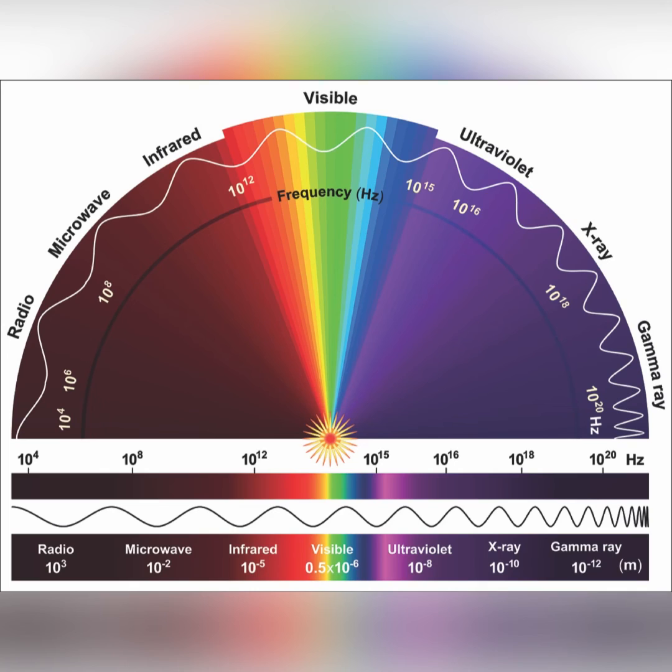Typically, lower energy radiation, such as radio waves, is expressed as frequency. Microwaves, infrared, visible, and UV light are usually expressed as wavelength. And higher energy radiation, such as x-rays and gamma rays, are expressed in terms of energy per photon.